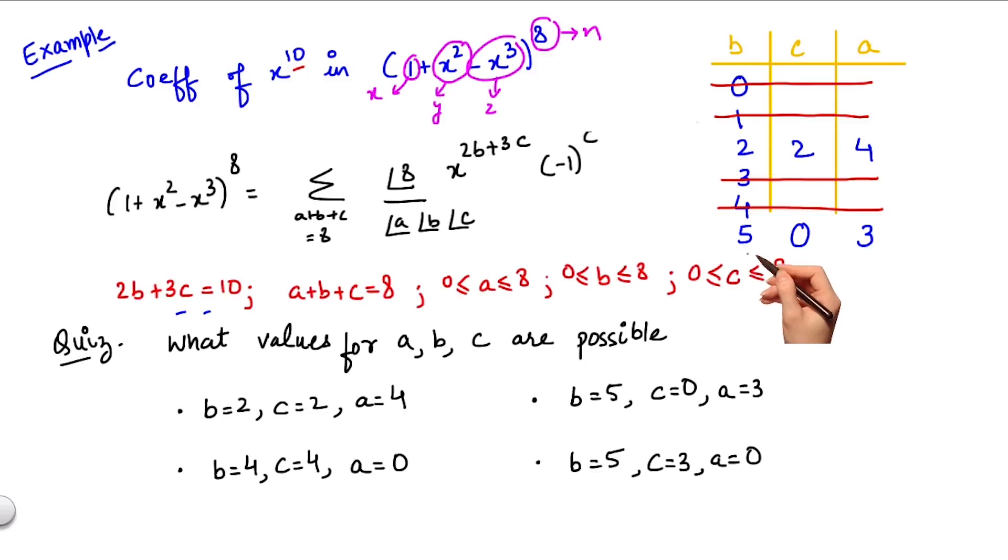For other increasing values of b, c becomes negative, hence they are not possible. Thus, I get two possible cases.